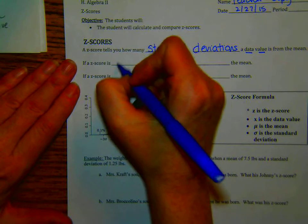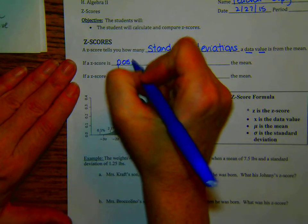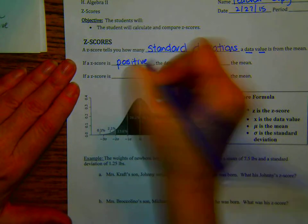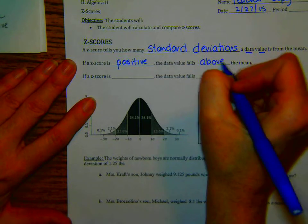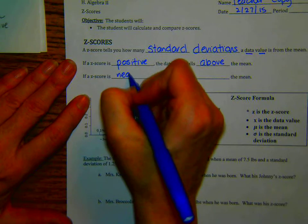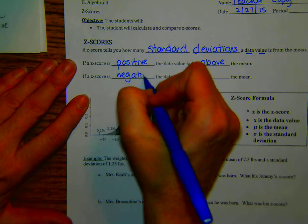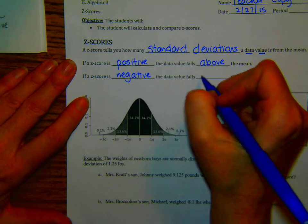So if a z-score is positive, then that data point falls above the mean. And if the z-score is negative, as you would guess, the data falls below the mean.